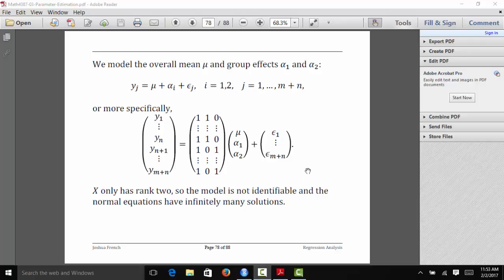If we wrote this using matrix notation, we'd have our column of responses, y1 down to ym plus n. We'd have our column of ones related to the intercepts, and then the first n observations for the second column would be a 1, whereas the remaining m observations would have a 0. The third column would have n zeros in the first part, and then m ones for the second part. We'd multiply that by the parameter vector mu, alpha 1, alpha 2, and then we'd have our m plus n dimensional vector of errors.